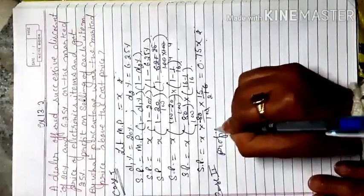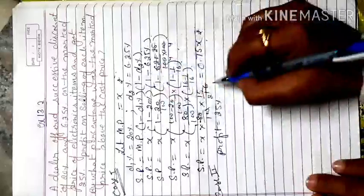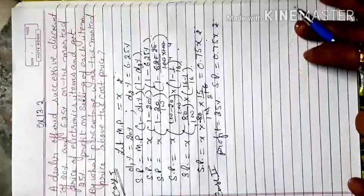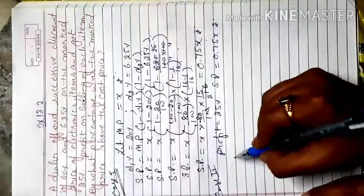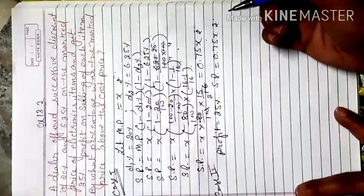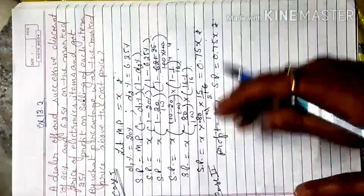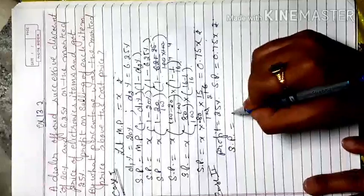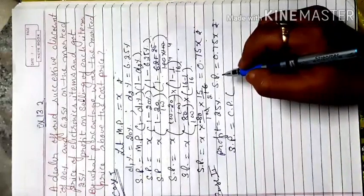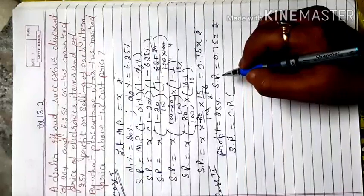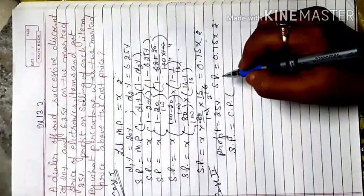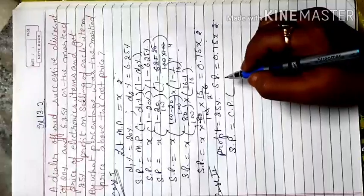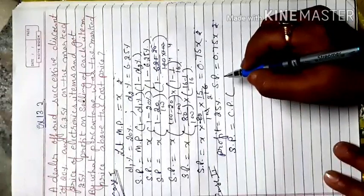In Case 2, profit = 25% and selling price = 0.75x rupees. Instead of applying the cost price formula directly, I use the simple selling price formula: SP = CP × (1 + profit%). This is the increase percentage formula — the cost price is increased by 25% to give the selling price.